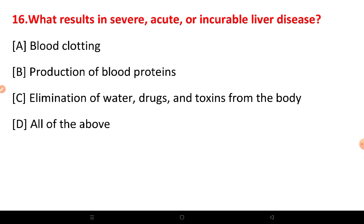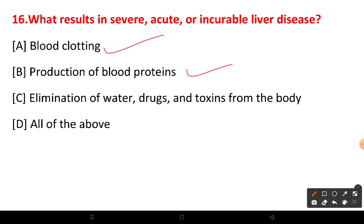What results in severe acute and incurable liver disease? Any disease affecting the liver should be treated. Severe liver damage affects blood clotting, the production of blood proteins, and the elimination of water from the body.